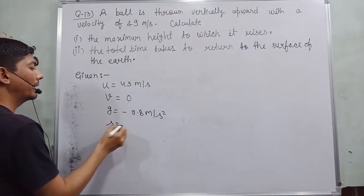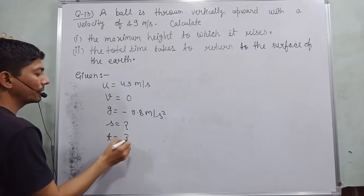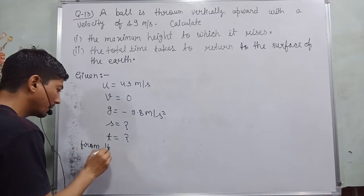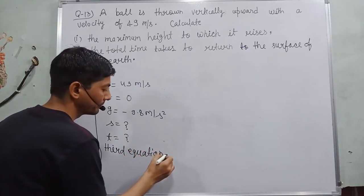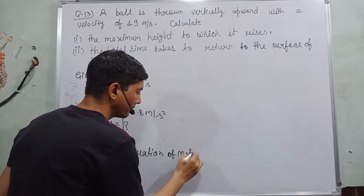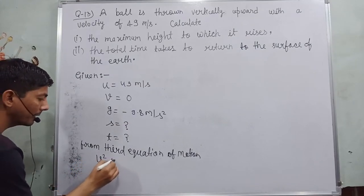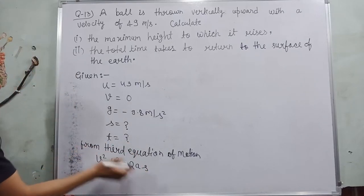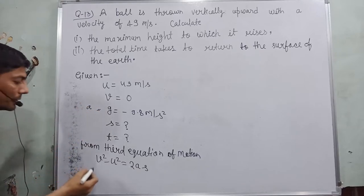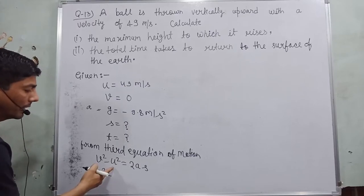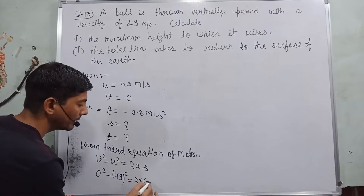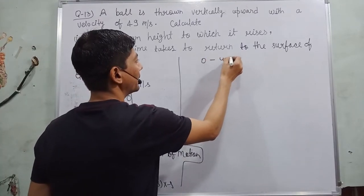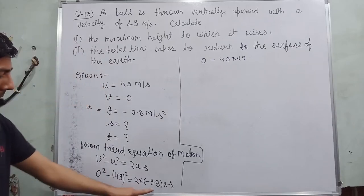So we need to find out maximum height which is s and time taken which is t. So for distance, I use third equation of motion. From third equation of motion, the formula is v square minus u square is equal to 2as. Here acceleration a is g. So the value of final velocity v is equal to zero and u is 49 square, 2 into acceleration is minus 9.8 into s. So 0 square is 0 minus 49 square, 49 into 49, and this multiplied by 19.6.